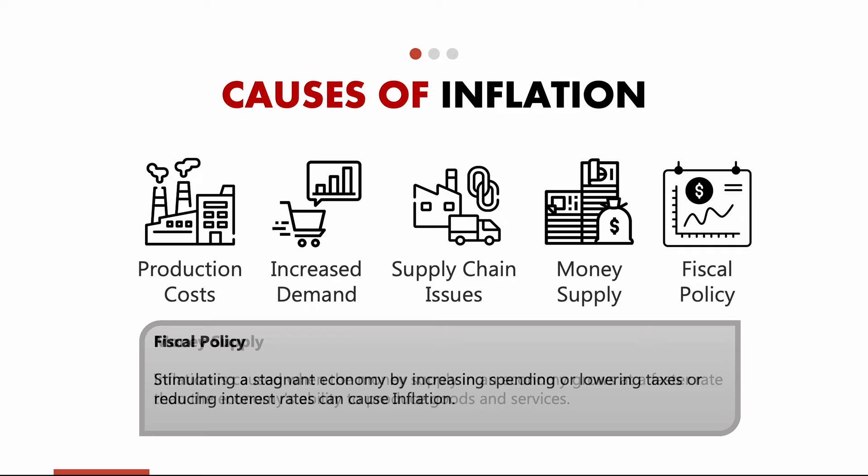Finally, fiscal policy. When the economy becomes slow or stagnant, the government can lower taxes or reduce interest rates, and overdoing that can cause inflation. There are many more subtle causes of inflation, but these are the main ones.